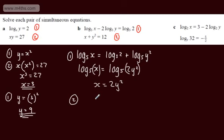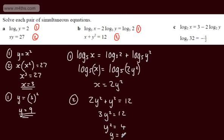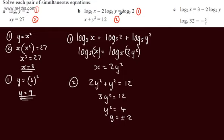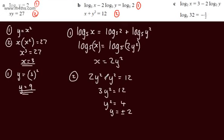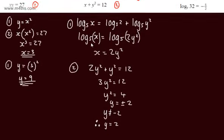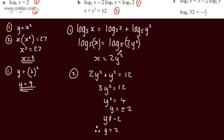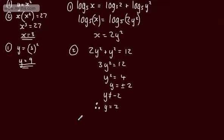I'm now going to substitute that into equation 2. So we have 2y squared plus y squared equal to 12. So 3y squared equals 12. Dividing both sides by 3, y squared equals 4. So y is equal to plus or minus the square root of 4, which is 2. Since y cannot equal minus 2 as we can't log a negative number, y must equal positive 2. Substituting back, x equals 2 lots of y squared, so 2 lots of 4 gives x equal to 8. So x equals 8 and y equals 2.